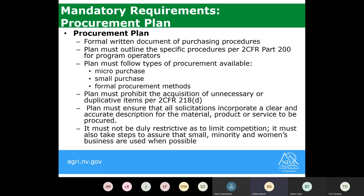There are a couple of mandatory requirements as we review your procurement. First is the procurement plan — each SFA must have a formal written document outlining your purchasing procedures. You'll identify your micro, small, and formal procurement method thresholds, equal to or stricter than the federal thresholds, not exceeding them. The plan must prohibit acquisition of unnecessary or duplicate items, ensure solicitations include clear and accurate descriptions of materials or services, must not unduly restrict competition, and must take steps to assure that small, minority, and women's businesses are used whenever possible. We have a template for a procurement plan attached to the meeting invitation.